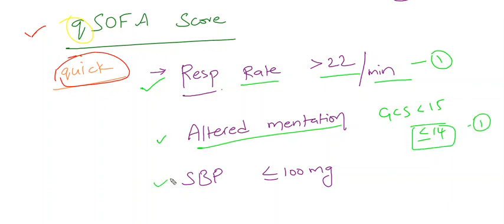And for systolic blood pressure, if it is less than or equal to 100 mm Hg, it will be given 1 point.